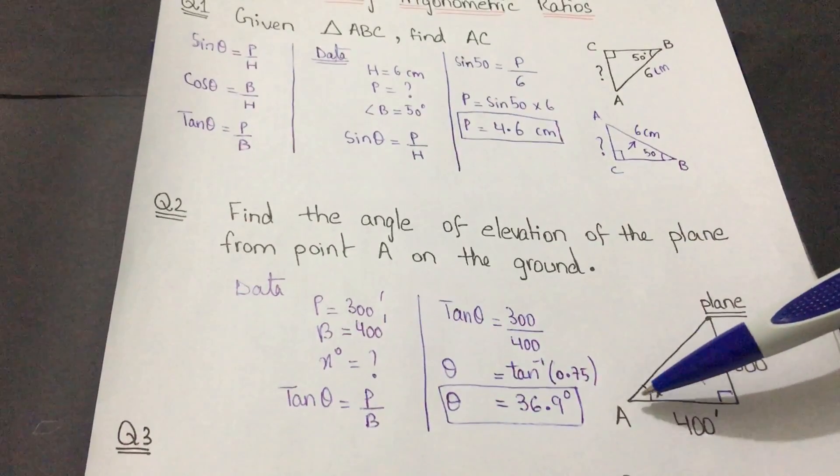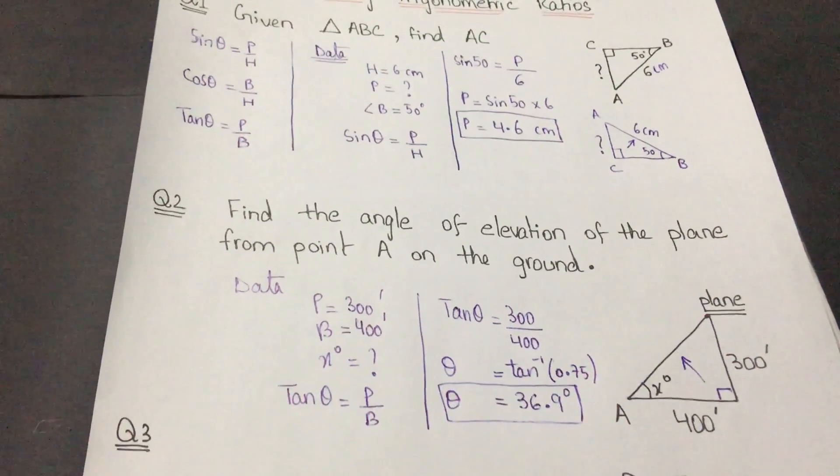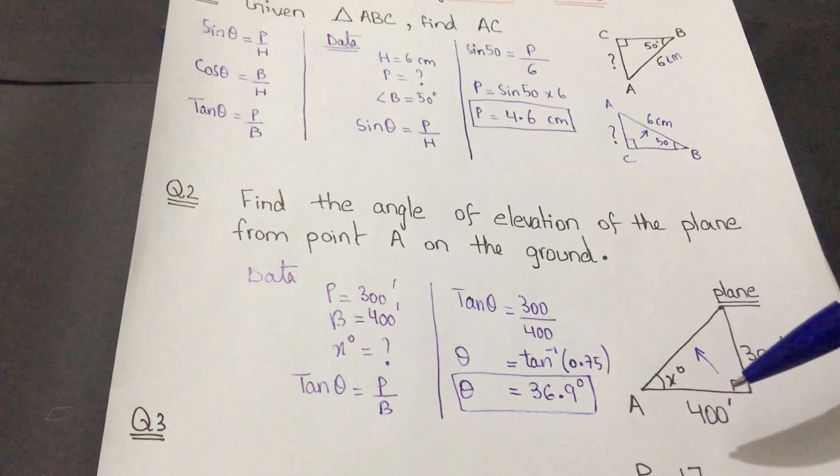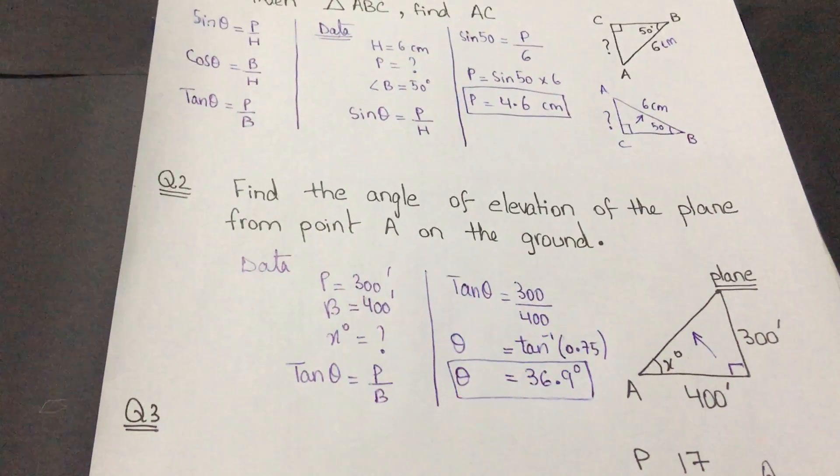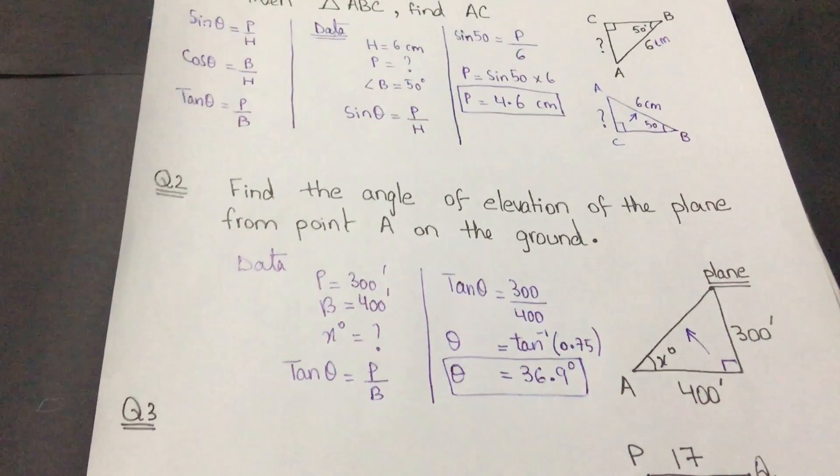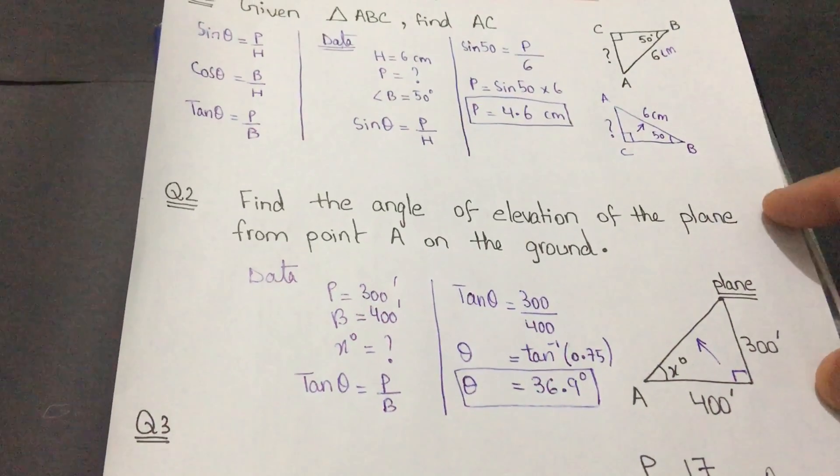I have to find this angle of elevation from point A to the plane. Since this is a right angle triangle, we will be using trigonometric ratios to find out the missing angle.